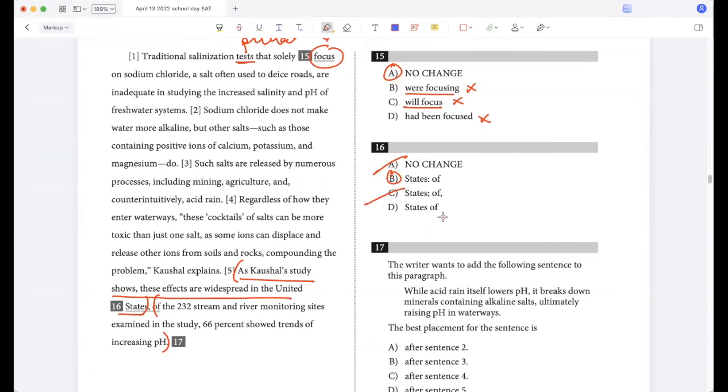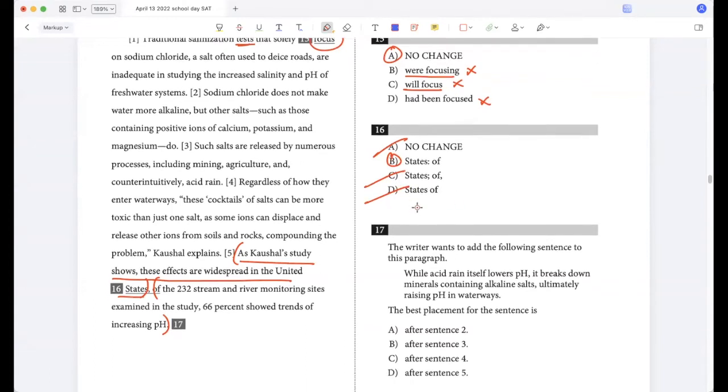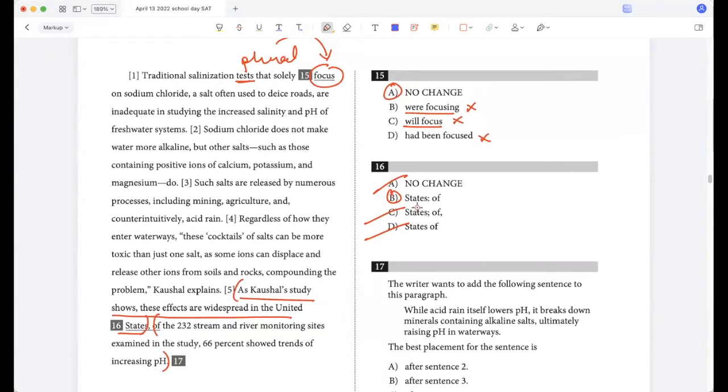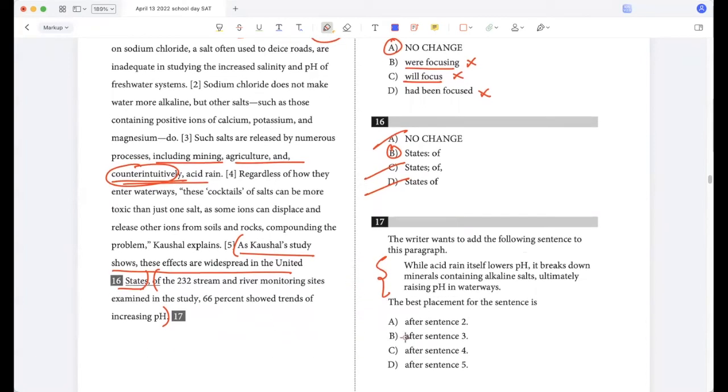And we definitely need a punctuation here. The writer wants to add the following sentence to this paragraph: While acid rain itself lowers pH, it breaks down minerals containing alkaline salts, ultimately raising pH in waterways. So I think we talked about acid rain here - such salts are released by numerous processes including mining, agriculture, and counterintuitively acid rain, right? Because you wouldn't expect acid rain to increase the alkalinity, and so I'm explaining how that happens, how that counterintuitive occurrence takes place. So this should come after sentence three.